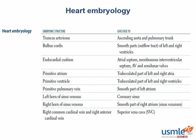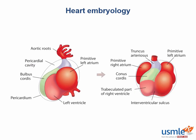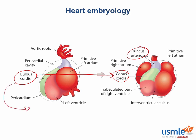Next up on our table, we have the bulbus cordis, which forms the smooth parts of the left and right ventricular outflow tract. This is fairly easy to visualize because the central part of the bulbus cordis becomes a very smooth cone-like structure called the conus cordis. It's this portion that directly feeds into the truncus arteriosus, which forms the aortic and pulmonary trunks. Therefore, the bulbus cordis, which goes on to form the conus cordis, forms the left and right ventricular outflow tracts.